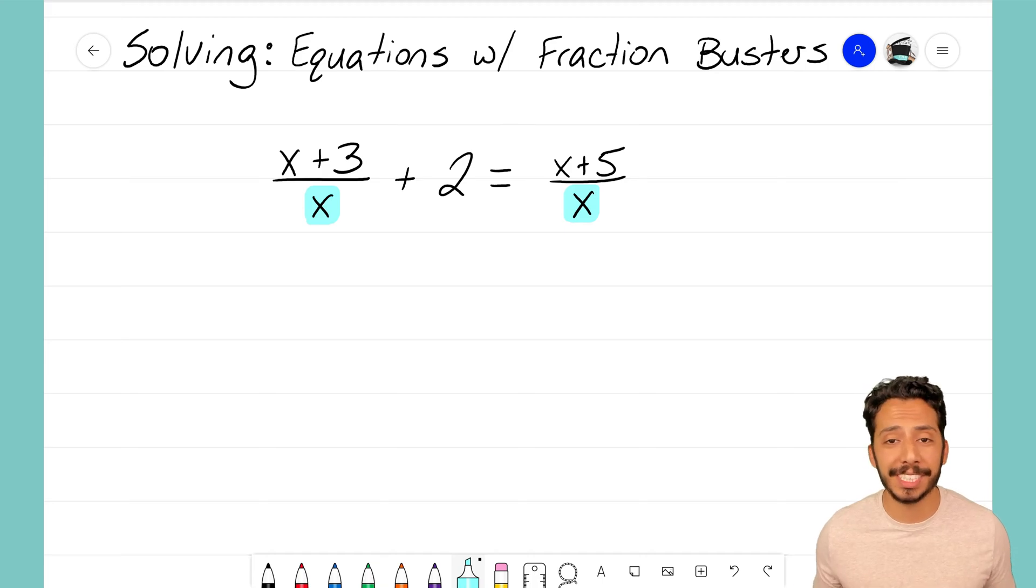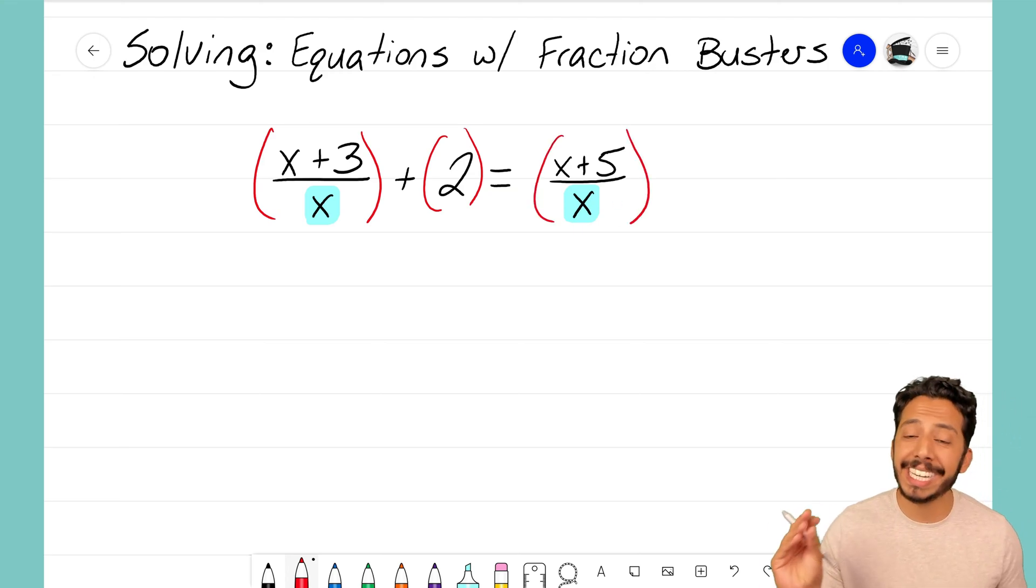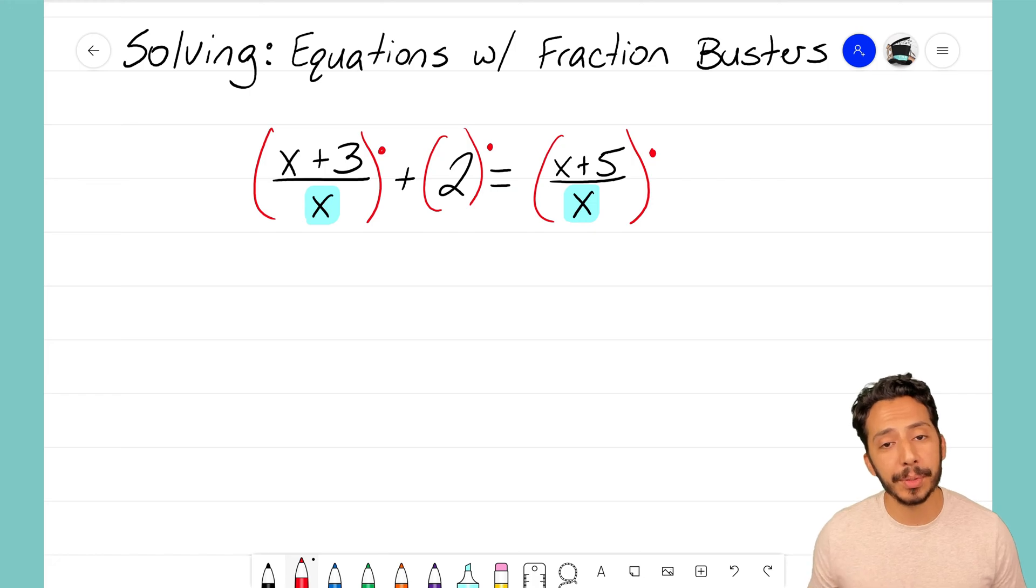The good news is that fraction buster still works here. We still are just going to think of a term we can multiply each term by to get rid of those fractions, to bust it up. But now this time we have a variable, and notice that the variable is the same for both fractions. That variable is x.